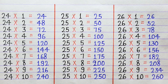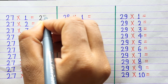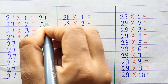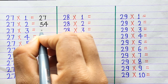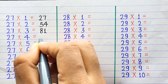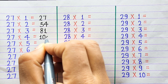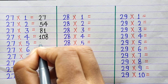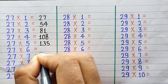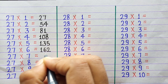27×1=27, 27×2=54, 27×3=81, 27×4=108, 27×5=135, 27×6=162.